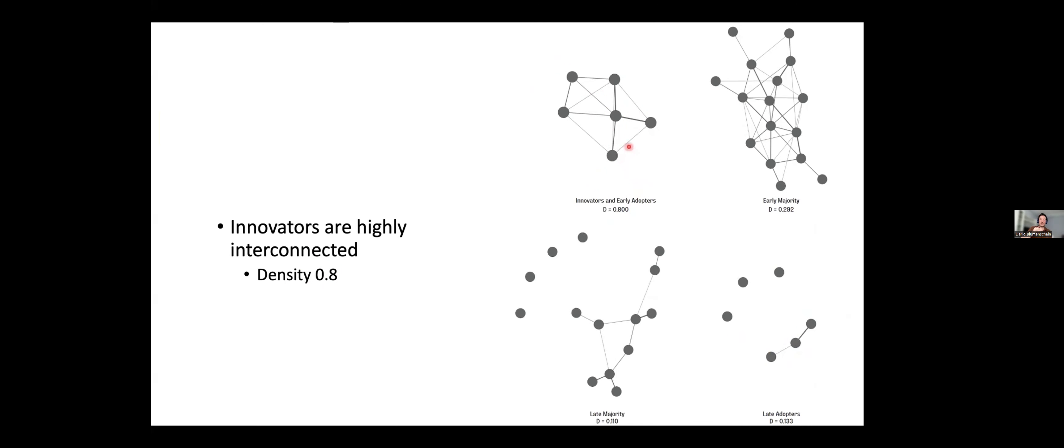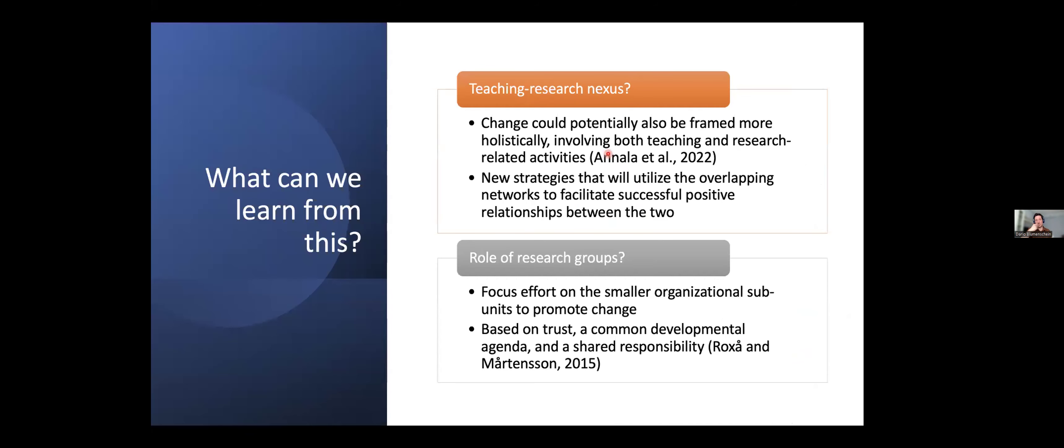And basically, there is some things that we have learned from this, from the study that we conducted. One relates to the teaching and research nexus. That's an ongoing conversation and that's an ongoing debate as well. Does a, is there such a thing as a teaching research nexus? And we have found, at least in our example, that there is. We have seen that people tend to speak to same colleagues about both teaching and research. And then some suggestions for enabling change, for facilitating change, at least at the departmental level, is that change could potentially be framed more holistically to involve both research and teaching related activities. And that we could implement strategy that will utilize this overlap between the two networks to facilitate successful positive relationships.